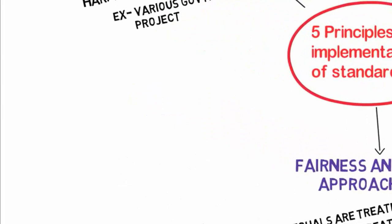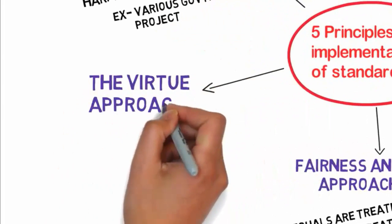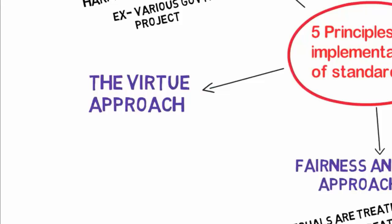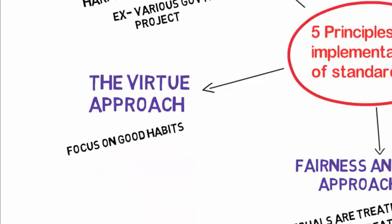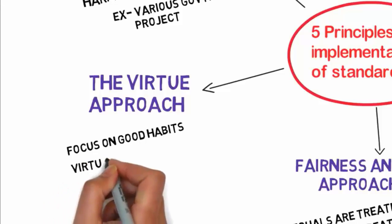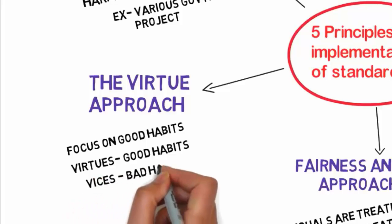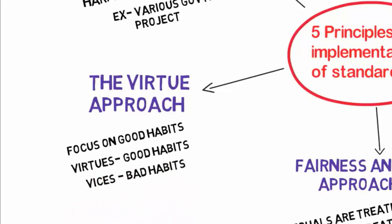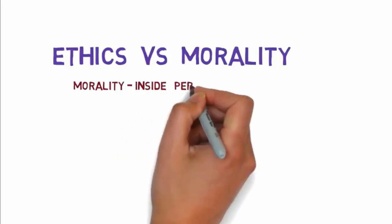The fifth and last principle is the virtue approach. This approach focuses on good habits. It considers virtues as only good habits and vices as bad habits.